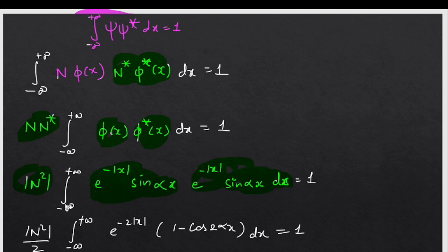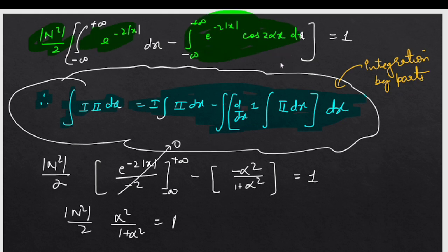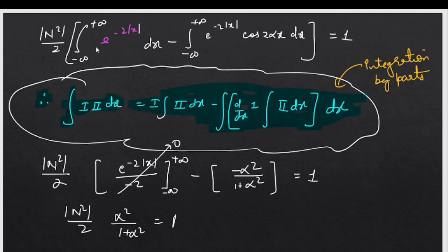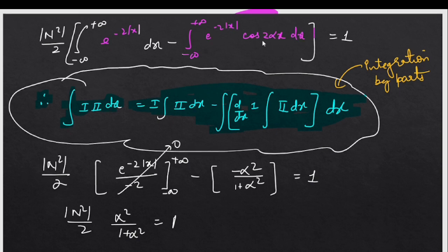We write the integrand as e^(-2x) times sin²(αx), which becomes [1 - cos(2αx)] / 2, with limits from minus infinity to plus infinity. Since we have one exponential function and one trigonometric function, we use integration by parts: integral of first times second dx equals first times integral of second minus integral of (d/dx of first times integral of second) dx.